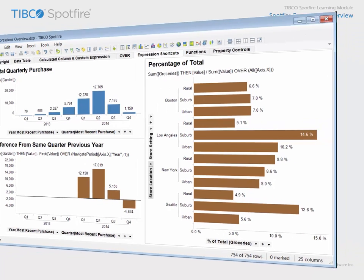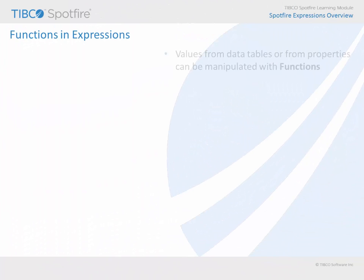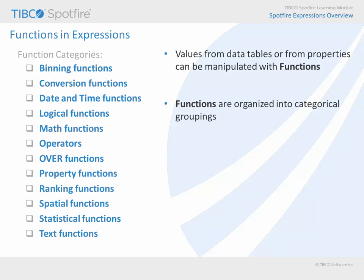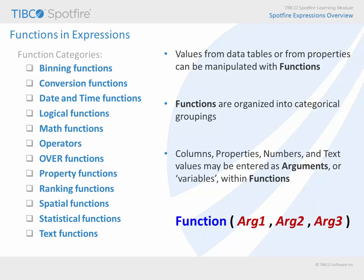While the examples employed thus far have used simple functions like sums and averages, values can be handled within expressions using a variety of functions. Somewhere in the neighborhood of 200 functions are available for use within the Spotfire expression language. Therefore, these functions are organized into categories, making it easier to locate the function of interest from the broad array of data handling capabilities which are available. As you begin to work with functions in expressions, you should be made aware that the columns, properties, numbers, and text values which are entered into expressions as variables are referred to as arguments. And those arguments, usually though not always, follow the function within parentheses and are separated by commas.